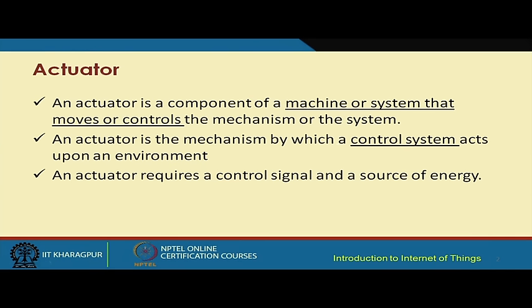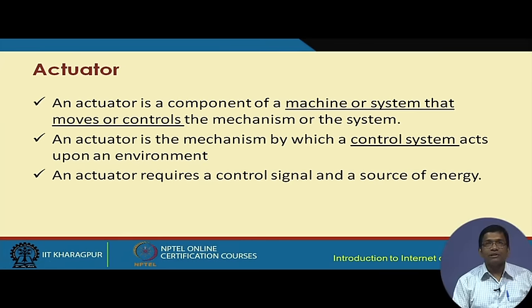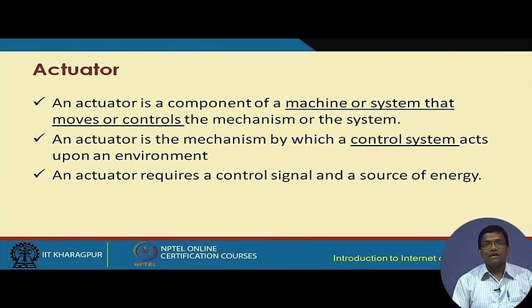Having seen some real-life actuators, let us understand the basic principles. An actuator is a component of a machine or system that moves or controls the mechanism of the system. Typically, actuators are based on some control system that acts on the environment. An actuator requires a control signal and a source of energy for functioning.